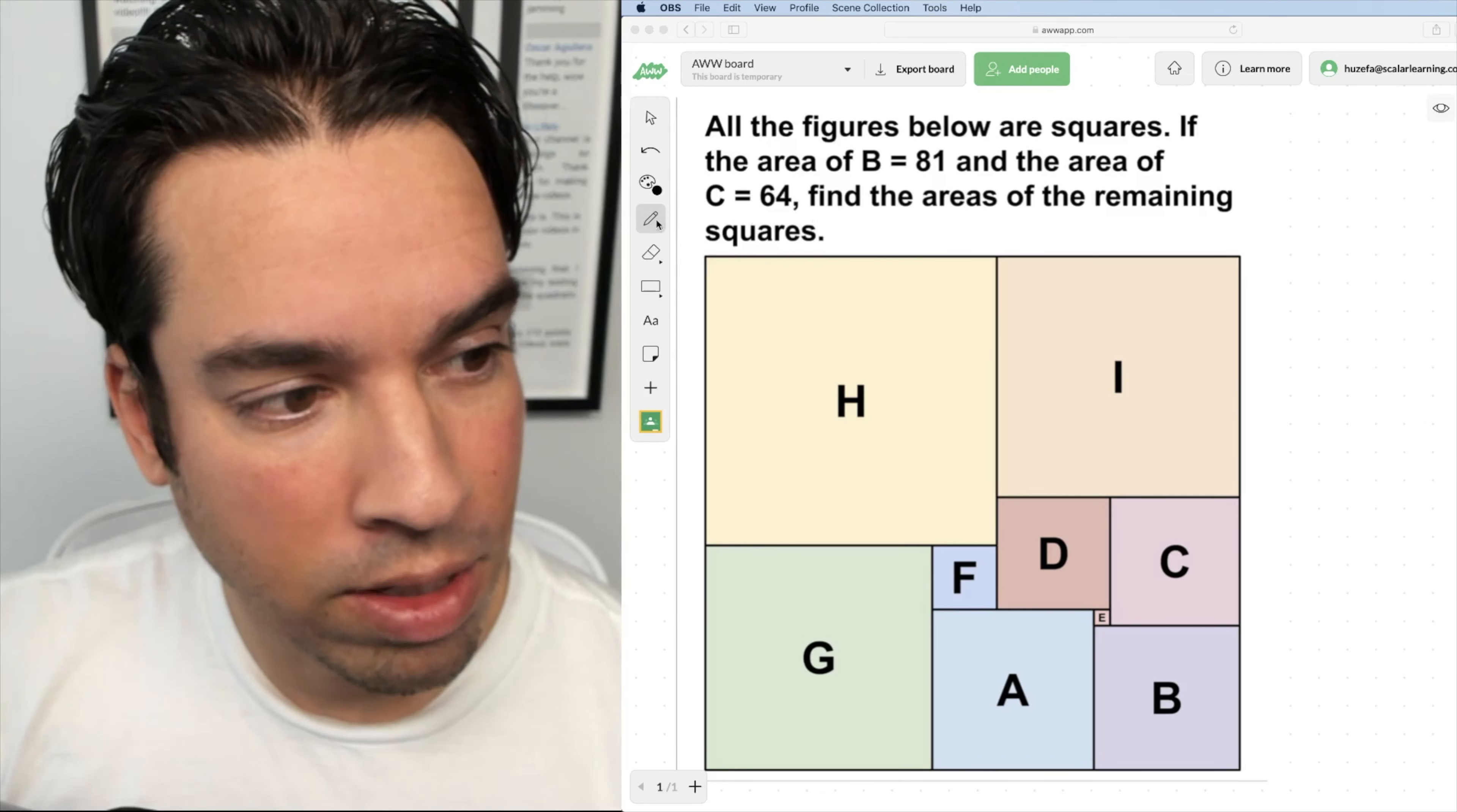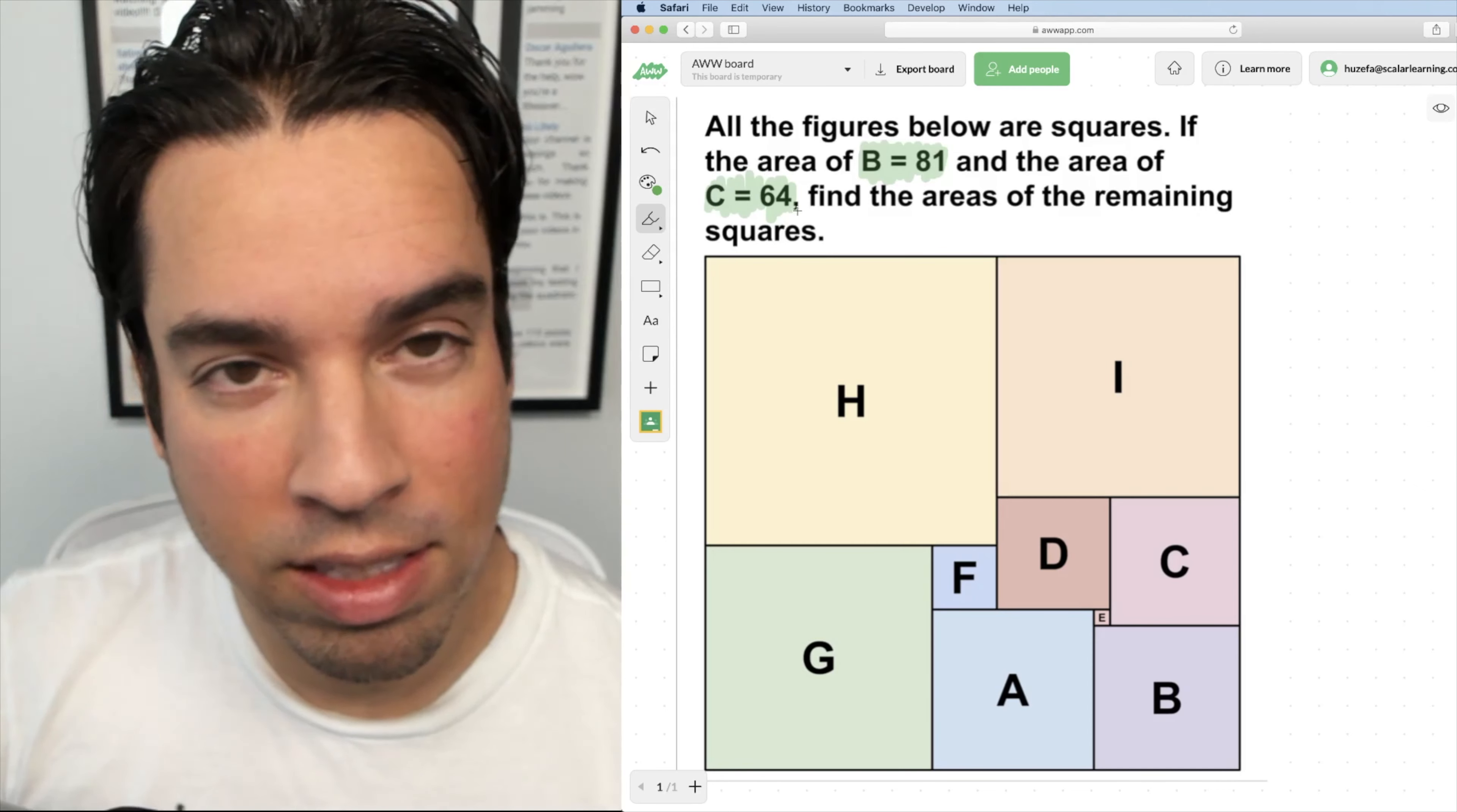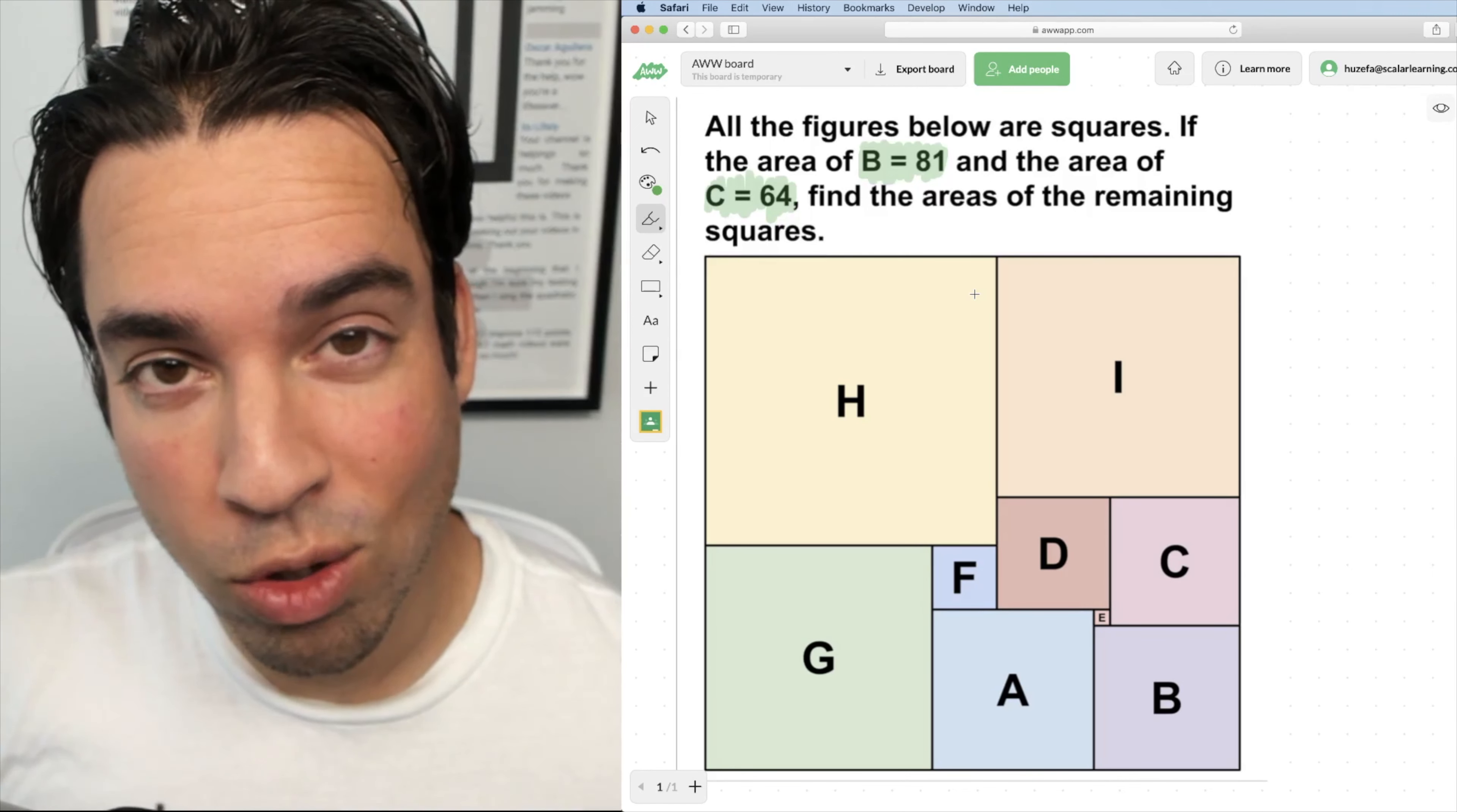And the givens are that the area of B, square B, is 81 and the area of square C is 64. Using that little bit of information and the fact that all of these little shapes are squares, your task is to find the area of every single other square.